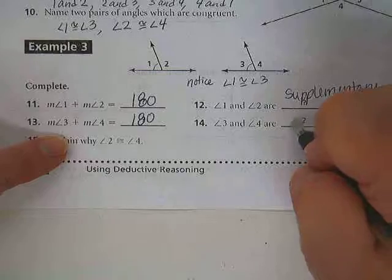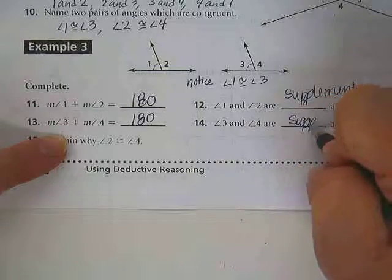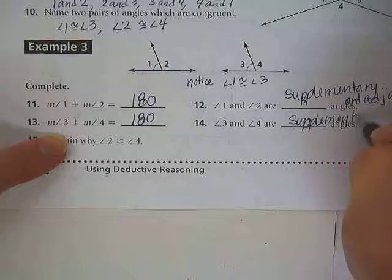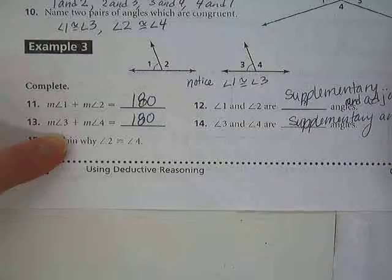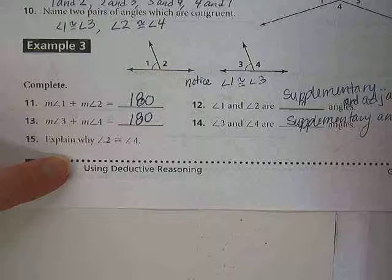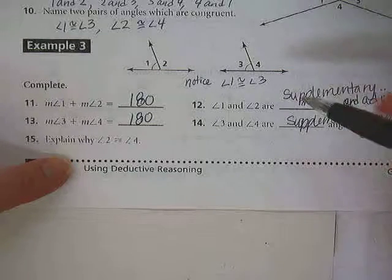Okay, what about 3 and 4? They add up to 180 as well because they are also supplementary and adjacent. Okay, this leads us to figuring out question 15.